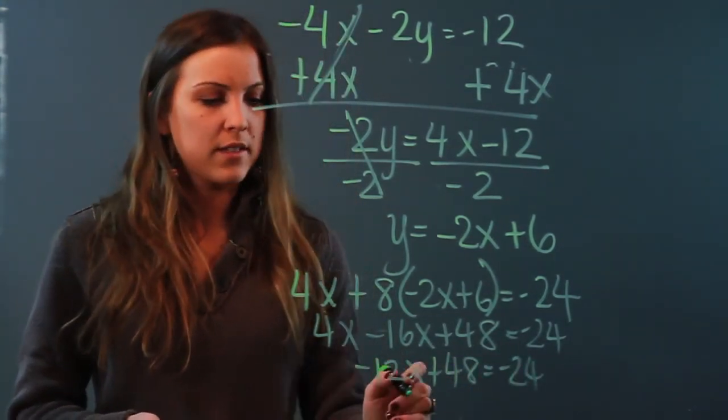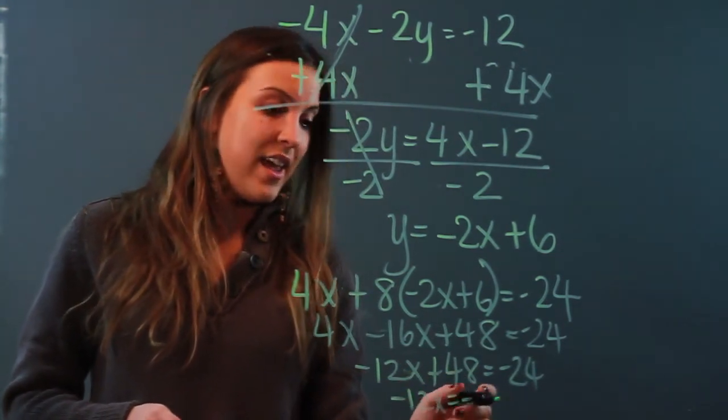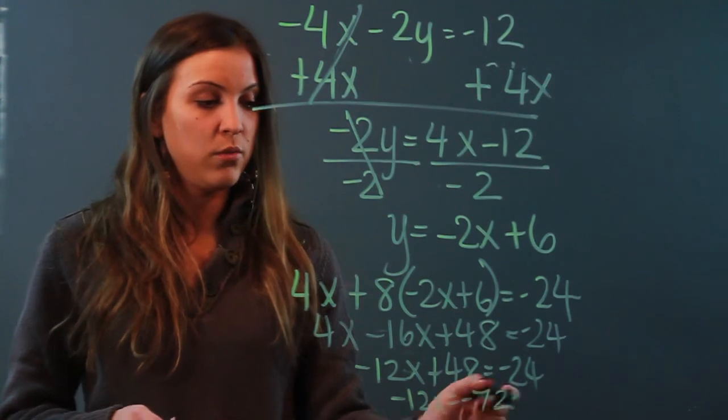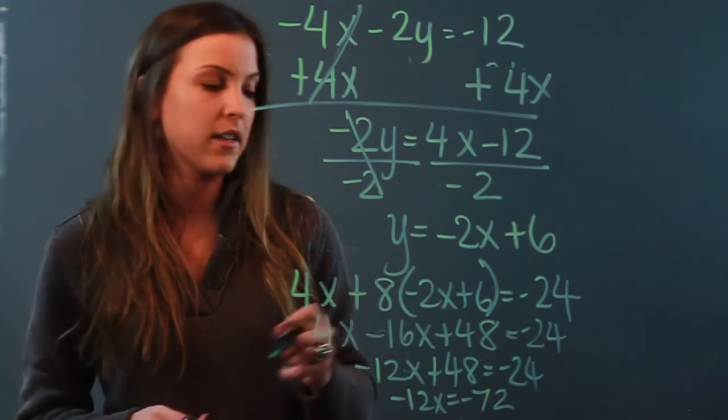Subtract 48 from both sides. So I'm going to get negative 12x equals negative 72. And then when I divide both sides by negative 12 I'm going to get x equals positive 6.